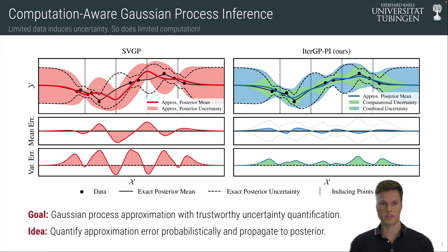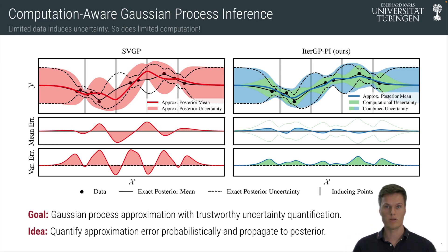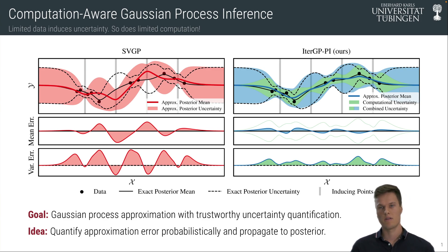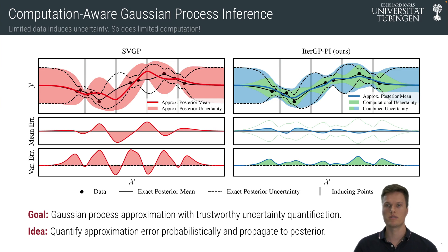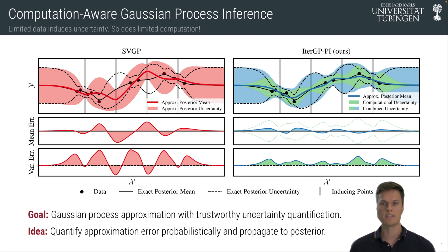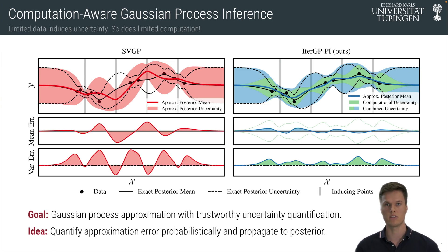The idea of this work is that we can actually quantify the approximation error coming from only performing a limited amount of computation and propagating it to the posterior. On the right side we have our method, and as you can see the approximate posterior mean is also somewhat off of the mathematical posterior mean, but the uncertainty decomposes into two sources: in green the computational uncertainty, which is the source of error coming from approximation, and in blue the mathematical uncertainty, which is the source of error coming from only observing a limited amount of data of the latent function.